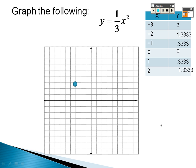So the points are: negative 3 gives 3, negative 2 gives 1.333, negative 1 gives 0.333, 0 gives 0, 1 gives 0.333, and 2 gives 1.333. Plot those points and connect them — it's basically a parabola, but the one-third out front makes it wider.